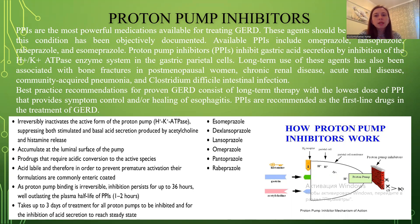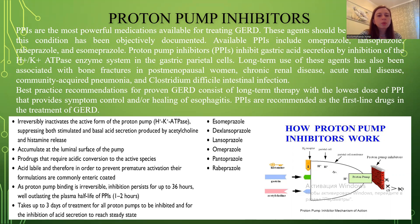PPIs inhibit gastric acid secretion by inhibition of the H+/K+-ATPase enzyme system in the gastric parietal cells. Long-term use has been associated with bone fractures in postmenopausal women, chronic renal disease, acute renal disease, community-acquired pneumonia, and Clostridioides difficile intestinal infection. Best practice recommendation consists of long-term therapy with the lowest dose of PPI that provides symptom control and healing of esophagitis. PPIs are recommended as the first-line drugs in treatment of GERD.